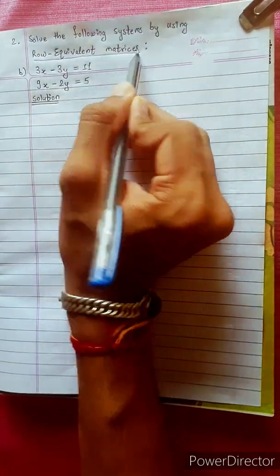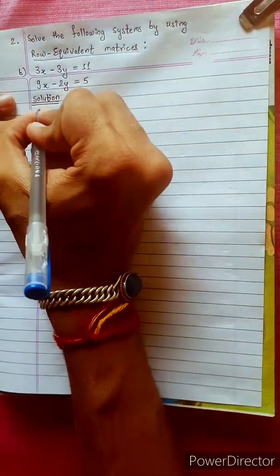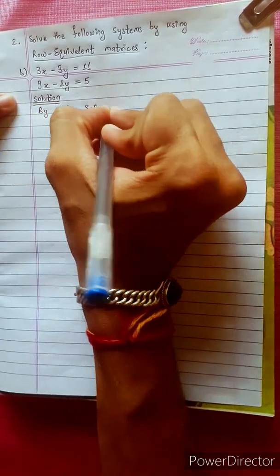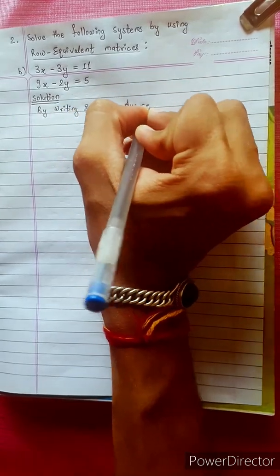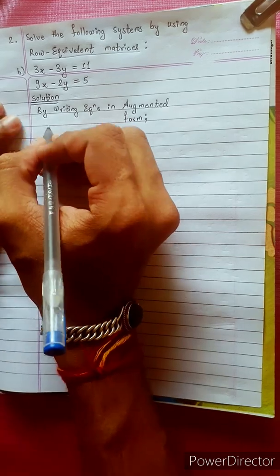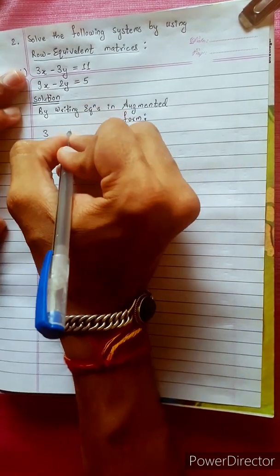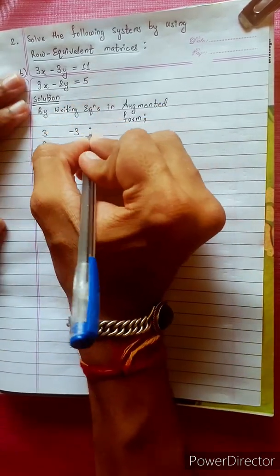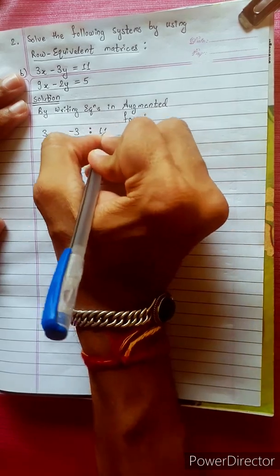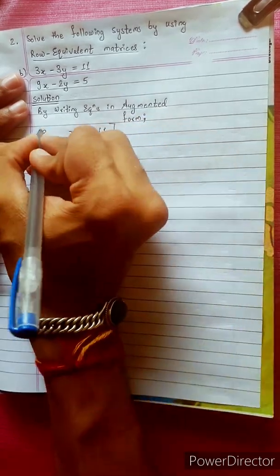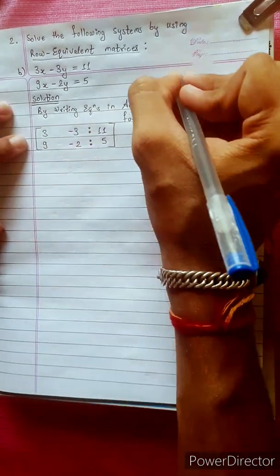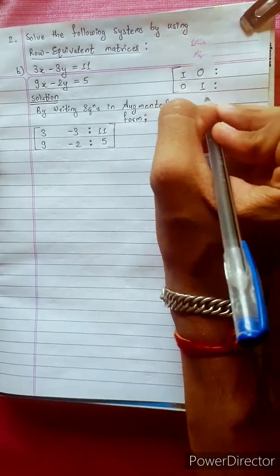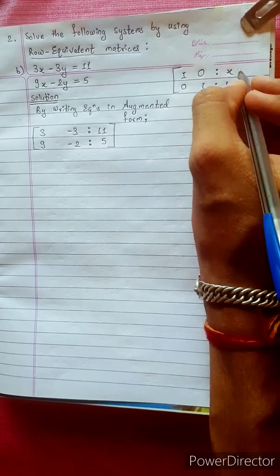Solve the following systems by using Row Equivalent Matrix by writing the equations in the augmented form. The augmented form has coefficients: 3, -3, 9, -2 equals 1, equals S3. We will find the values of x and y.